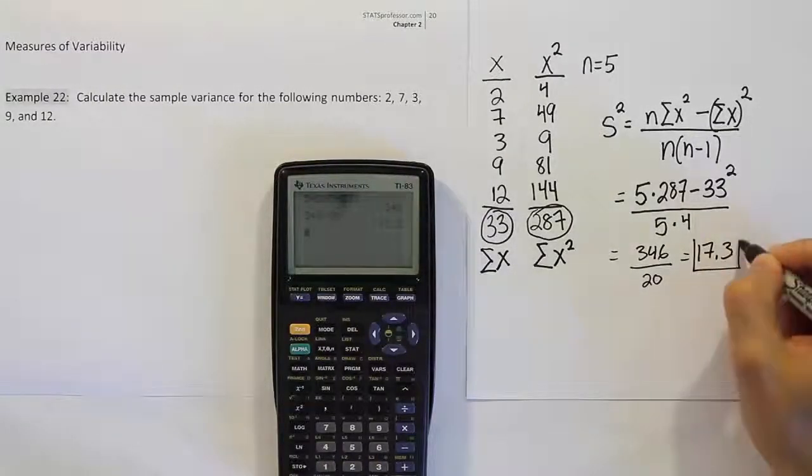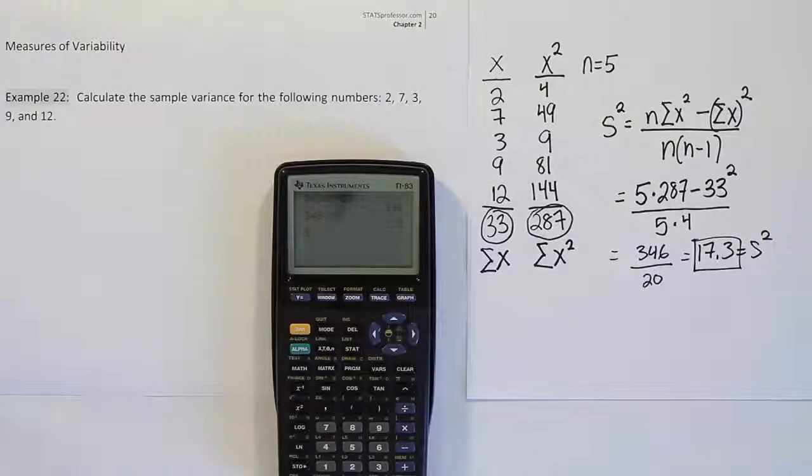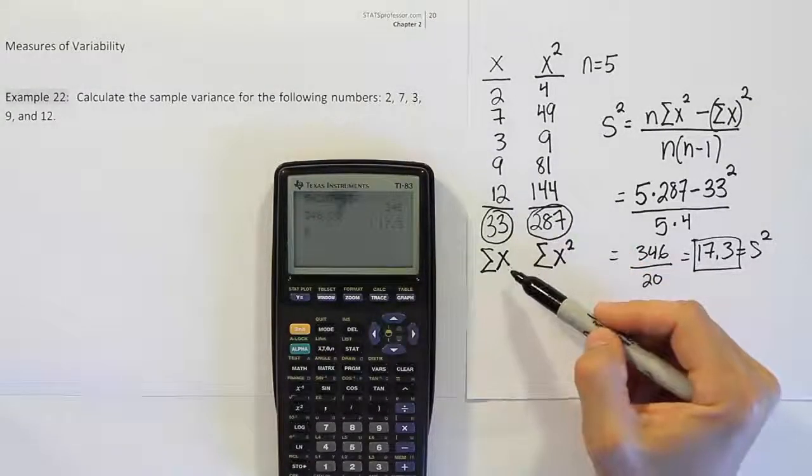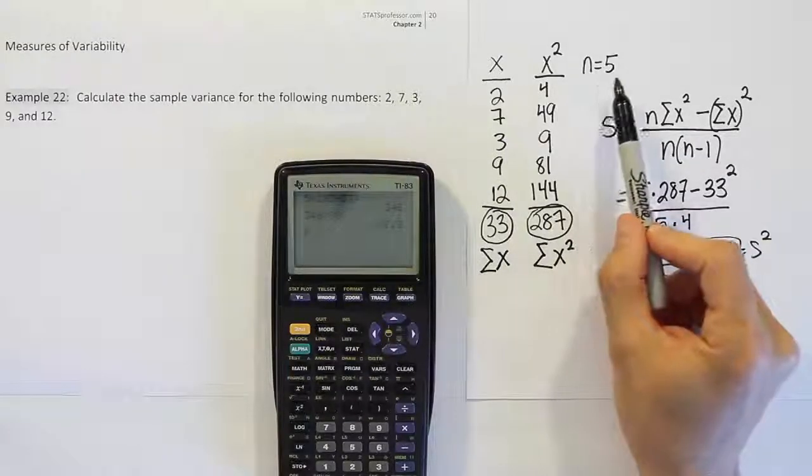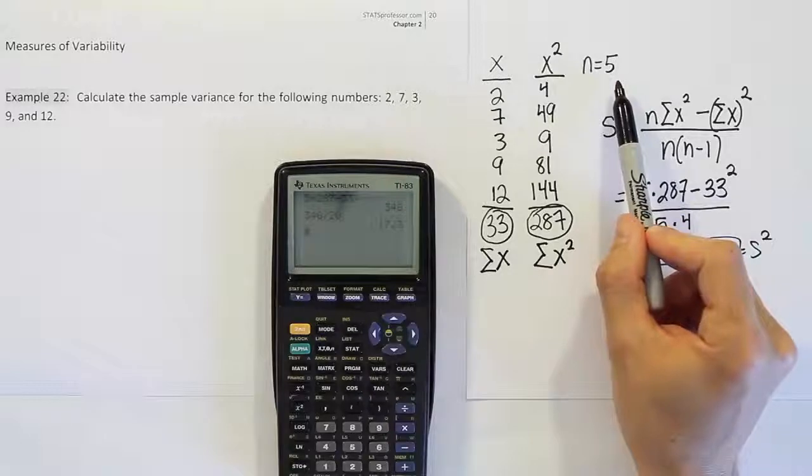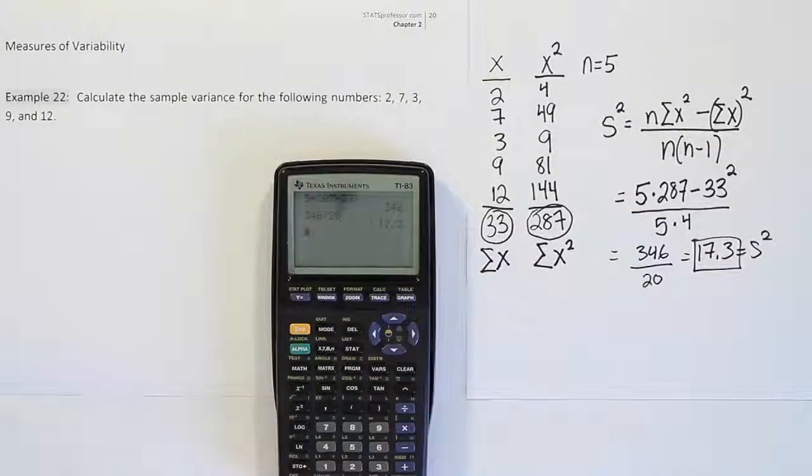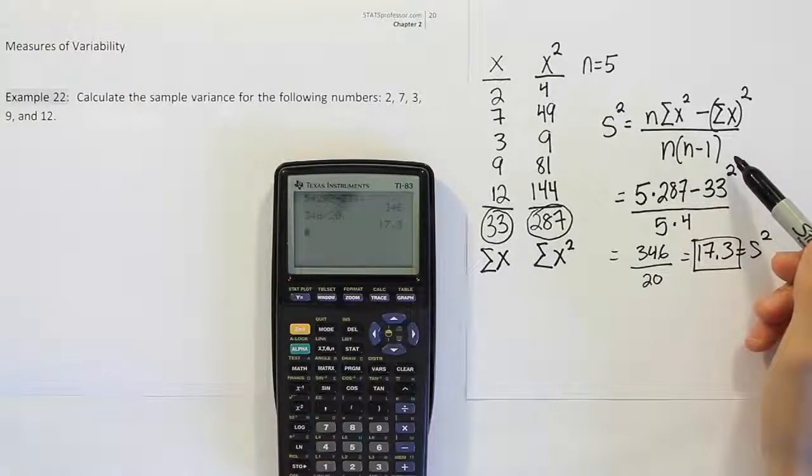And that is your sample variance, s squared. Alright, so the calculation is actually not too bad as long as you do the steps as we described. So you sum the data. You square all the data and you add it together. Count up how many data values you were given in the problem initially. And with those variables, you can come to the formula and fill it in.